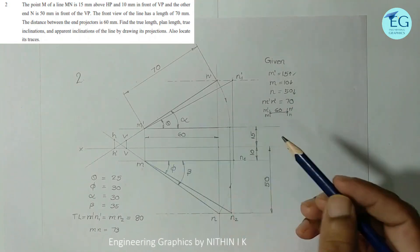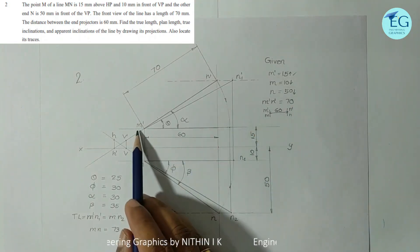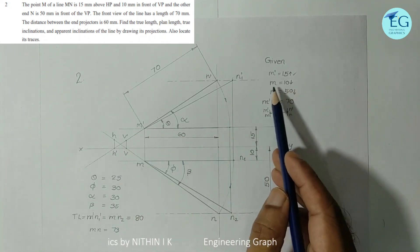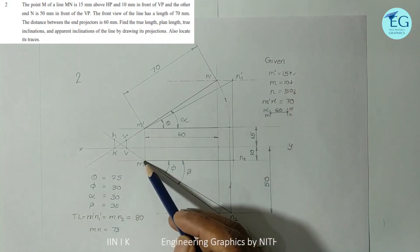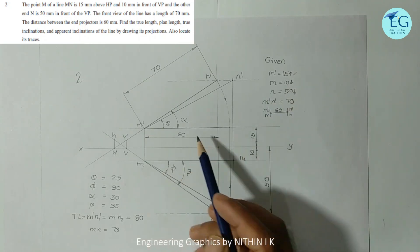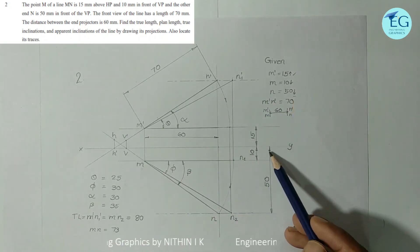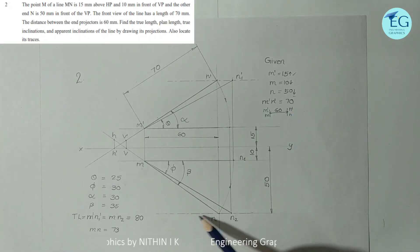M 15mm is located. M 10mm is located in front. M is located in front of VP. 50mm is located in front for N.